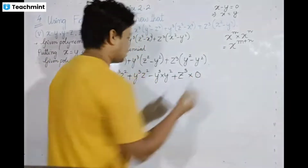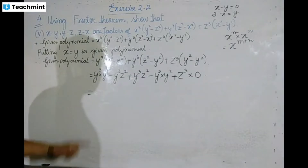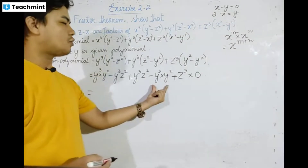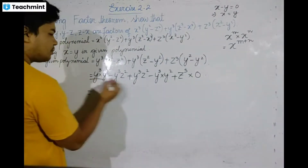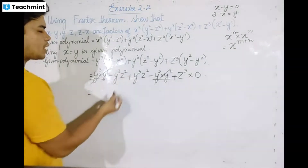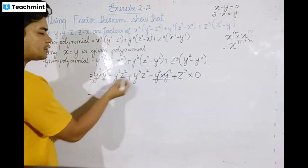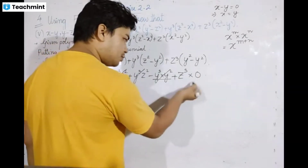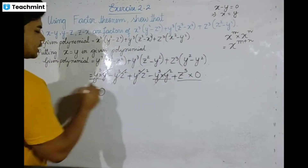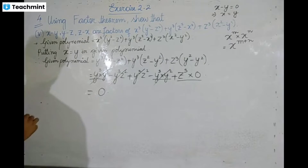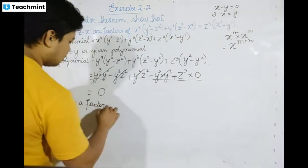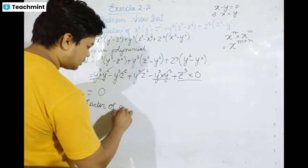z cubed multiplied by zero gives zero — any number multiplied by zero is zero. The terms cancel out, giving zero. Therefore, (x minus y) is a factor of the given polynomial.